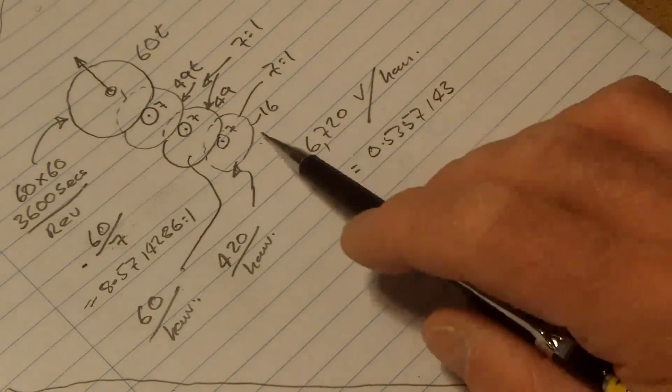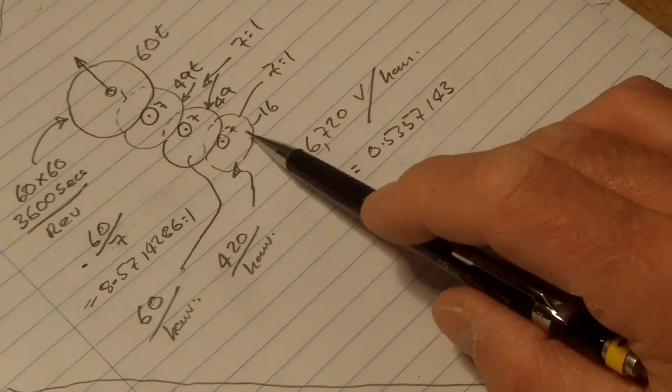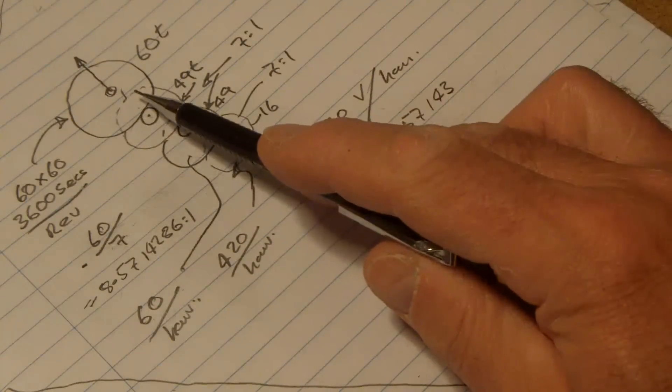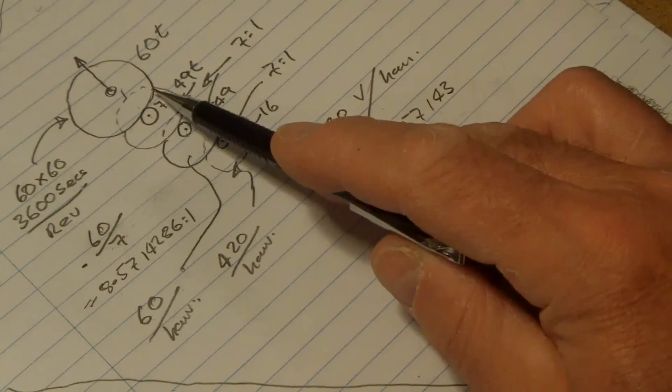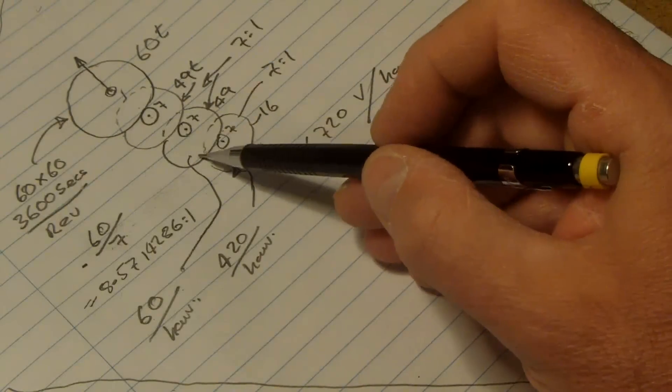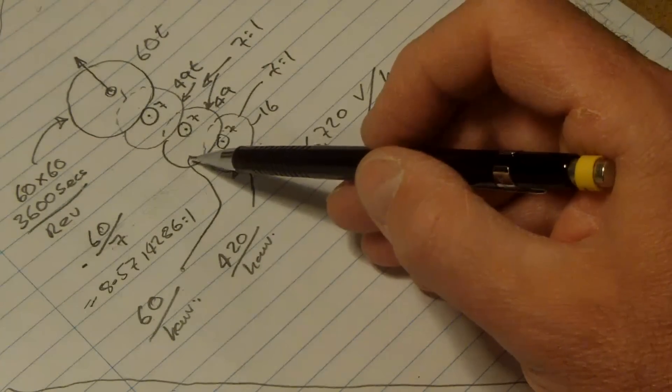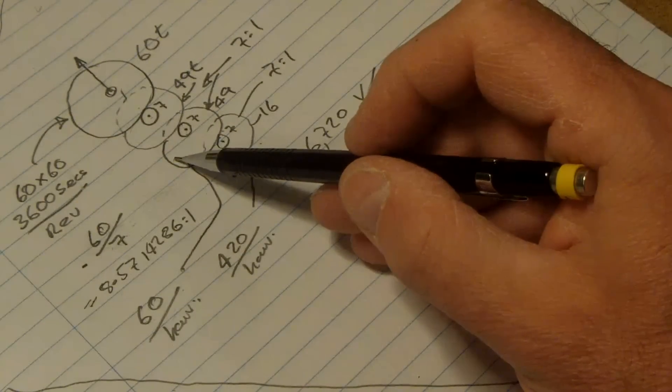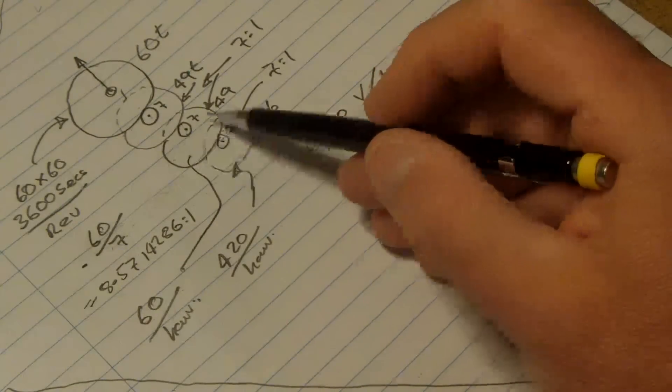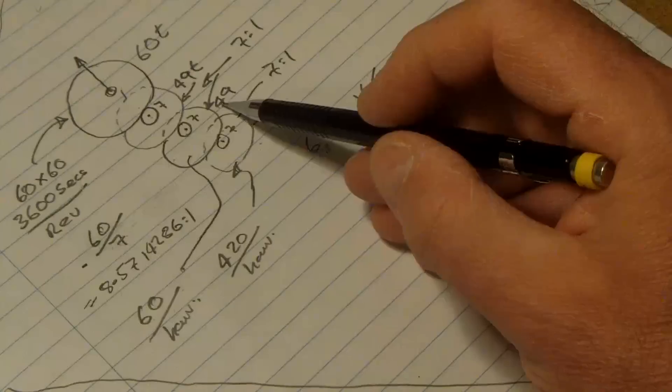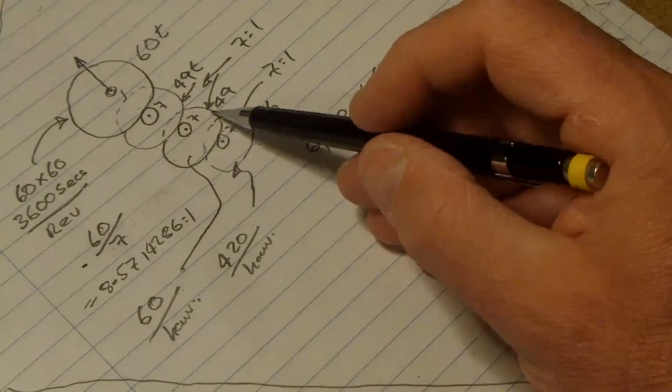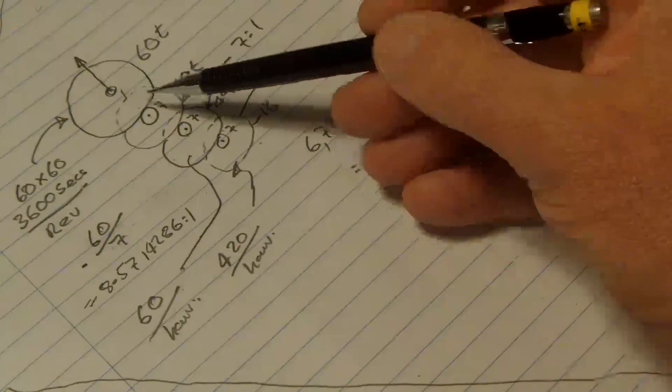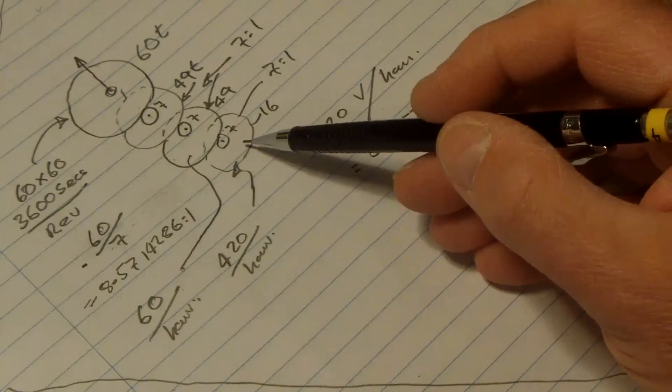So looking at this, I had anticipated that I would be modifying the escapement wheel. But given that this wheel, the second one away from the minute wheel, given that that's one revolution per minute, if I've got a two second pendulum I only need 30 teeth on that gear to allow me to impulse out every two seconds. At the moment it's got 49 teeth on it, so I think what I'll do is I will take those 49 teeth off and cut in 30 teeth in there.